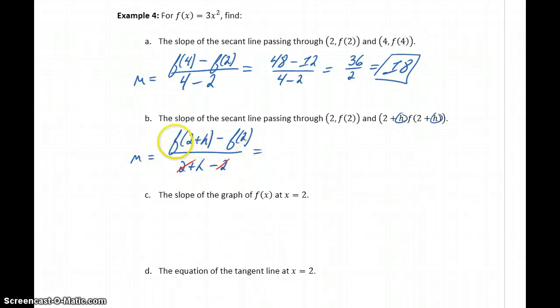So we see that 2 minus 2 in the denominator will cancel. So now what we need to do is evaluate f(2 + h) and f(2). So our original function was 3x squared, so we're writing it 3 times (2 + h), that quantity squared, minus 3 times 2 squared, all over h.